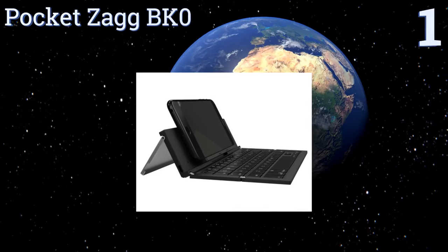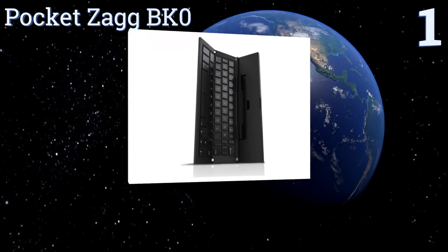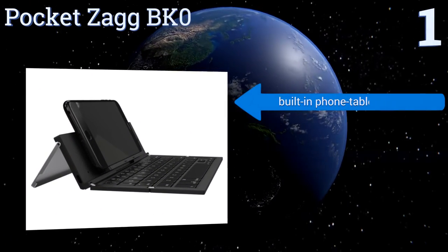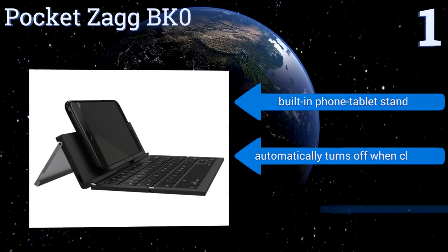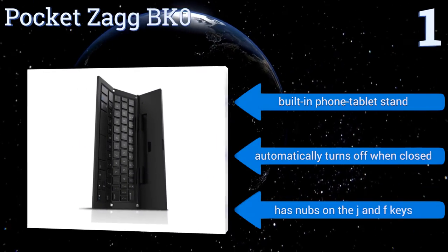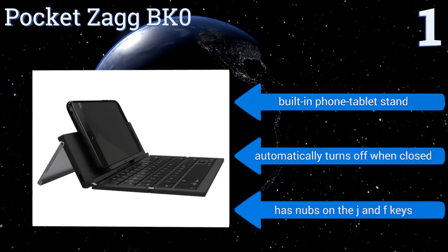Taking the top spot on our list, the Pocket Zagg BK0 maintains over 85% of the typing space used on standard desktop keyboards, so it shouldn't hinder your speed too much. Its strong magnets are also designed to keep it secure when folded up and it's available for both Android and iOS. It includes a built-in phone or tablet stand and automatically turns off when closed. It has nubs on the J and F keys.